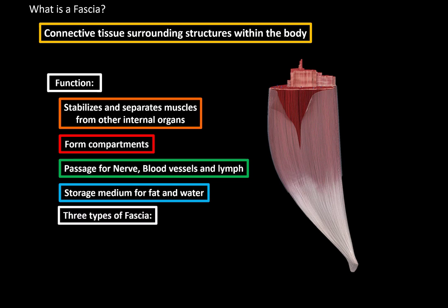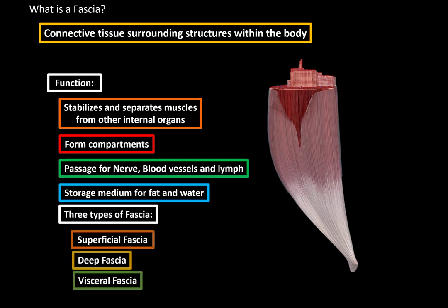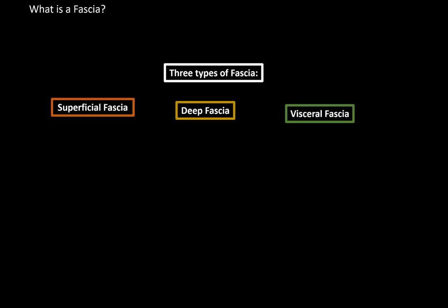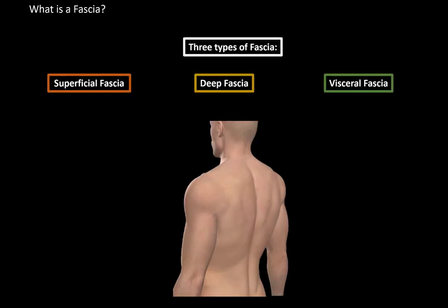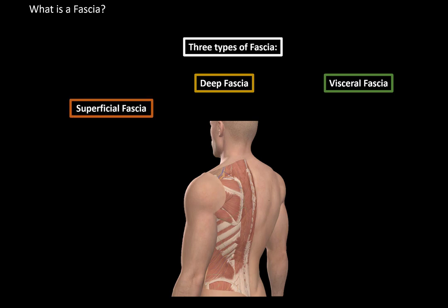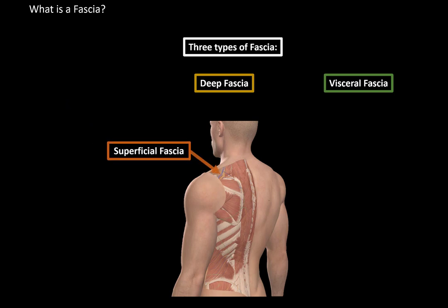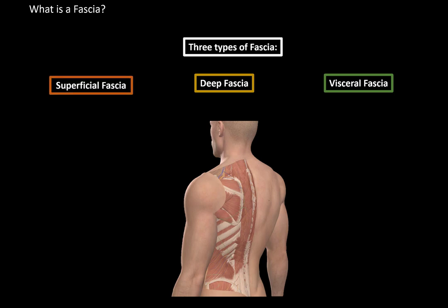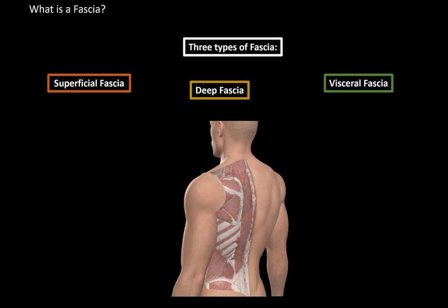There are three types of fascias that we need to know: the superficial fascia, the deep fascia, and the visceral fascia. Here's the skin without removing any layers. If you remove just the layers of the skin, you will see the superficial fascia located right underneath the skin. And when you remove the superficial fascia, you will see the deep fascia.